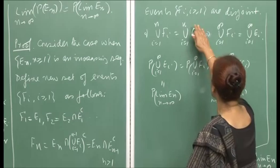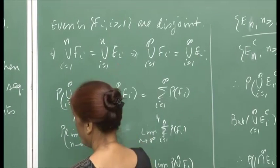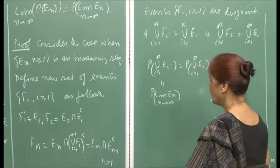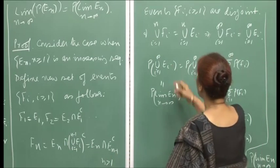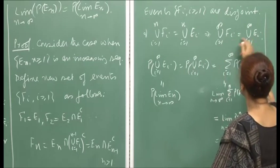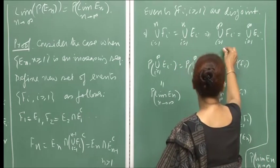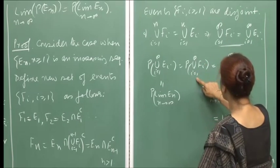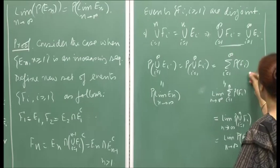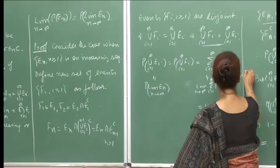We have ∪ᵢ₌₁ⁿ Fᵢ = ∪ᵢ₌₁ⁿ Eᵢ, because by removing common parts we make sets disjoint but retain all elements. So P(∪ᵢ₌₁^∞ Eᵢ) = P(∪ᵢ₌₁^∞ Fᵢ). Since the Fᵢ's are disjoint, this equals Σᵢ₌₁^∞ P(Fᵢ) by axiom 3. The left side is P(lim Eₙ) by definition.